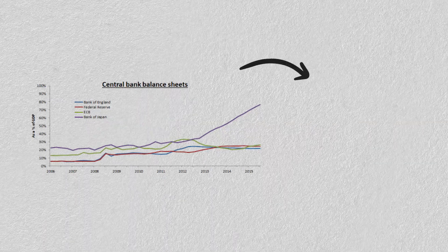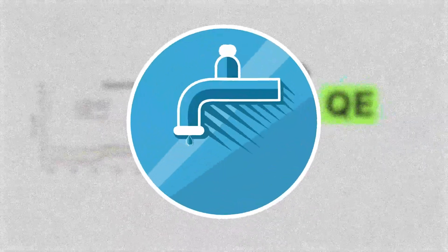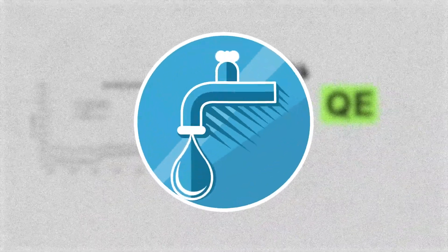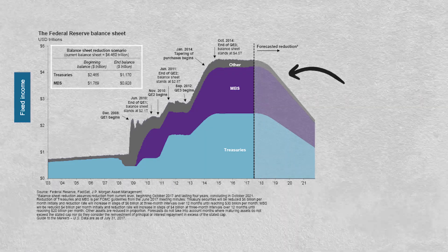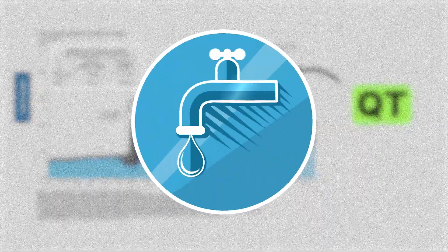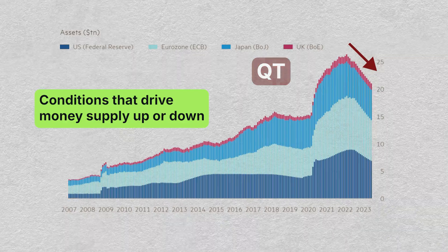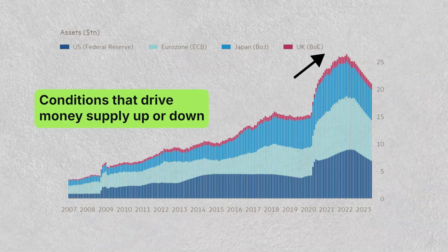When central banks expand their balance sheets through quantitative easing (QE), it injects fresh funds into the economy. When balance sheets are shrinking during quantitative tightening (QT), liquidity is pulled out. We can think of QE and QT as conditions that drive money supply up or down, and watching the global M2 supply is a good way to see whether global liquidity is growing or shrinking.